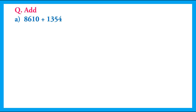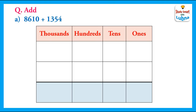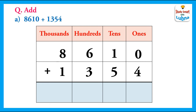Another question. We have to add 8610 and 1354. We write these 4-digit numbers below their place values: 8610 and 1354. We will add them. First of all, we will add the ones. 0 plus 4 equals 4. We write 4 in the ones column.